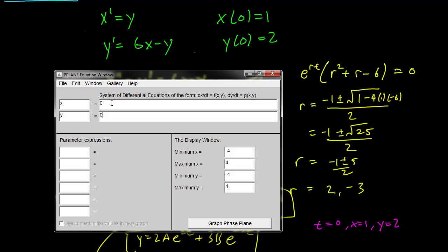So the interface is fairly simple. You just have to copy down the equation exactly. There's a prime over here that's a bit hard to see. Our equation is x prime equals y, y prime equals 6x minus y.